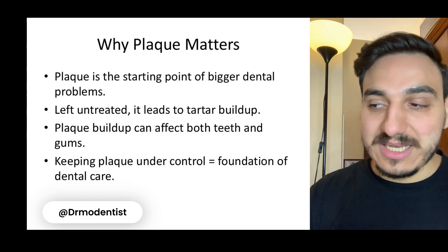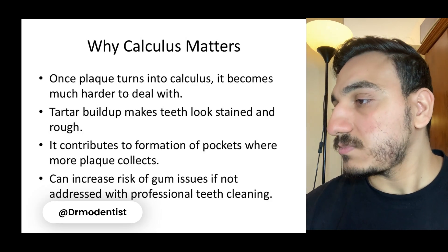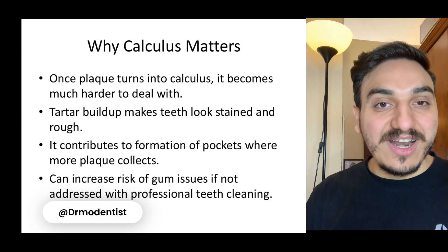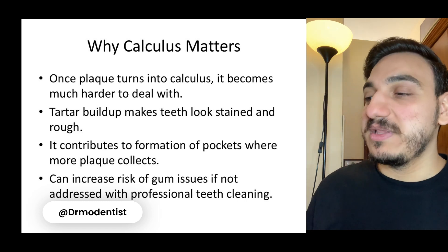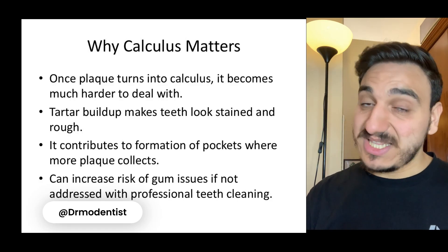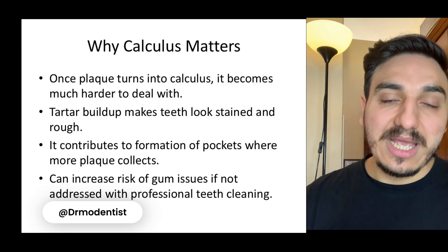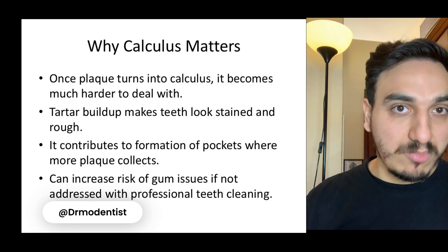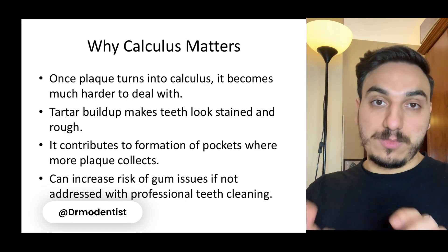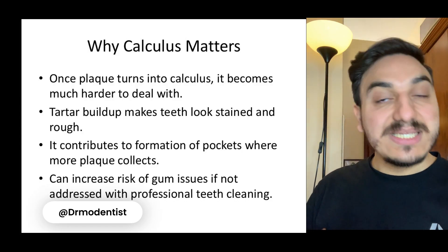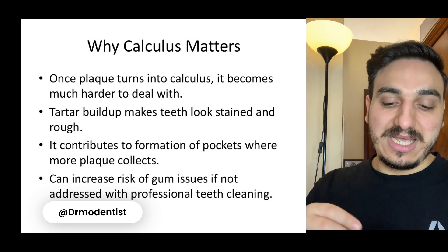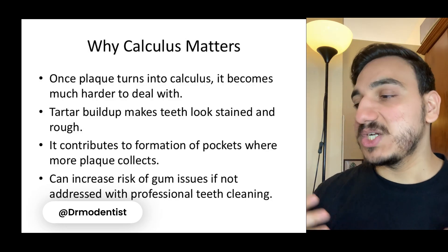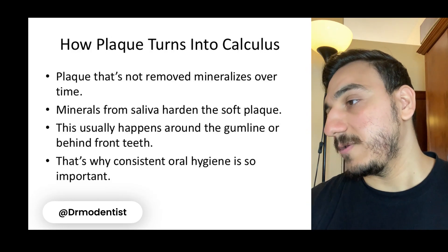Why does dental calculus matter? Once plaque turns into calculus it becomes much harder to deal with and is also a much harder physical structure. The tartar build-up makes teeth look stained, which is really bad for aesthetics — and so does dental plaque affect the appearance of your smile. Calculus also contributes to the formation of periodontal pockets, which need attention and can progress into further issues. Once these pockets form, dental plaque can accumulate even more inside them — you can see how this snowballs — increasing the risk of gum issues if not addressed with professional cleaning.